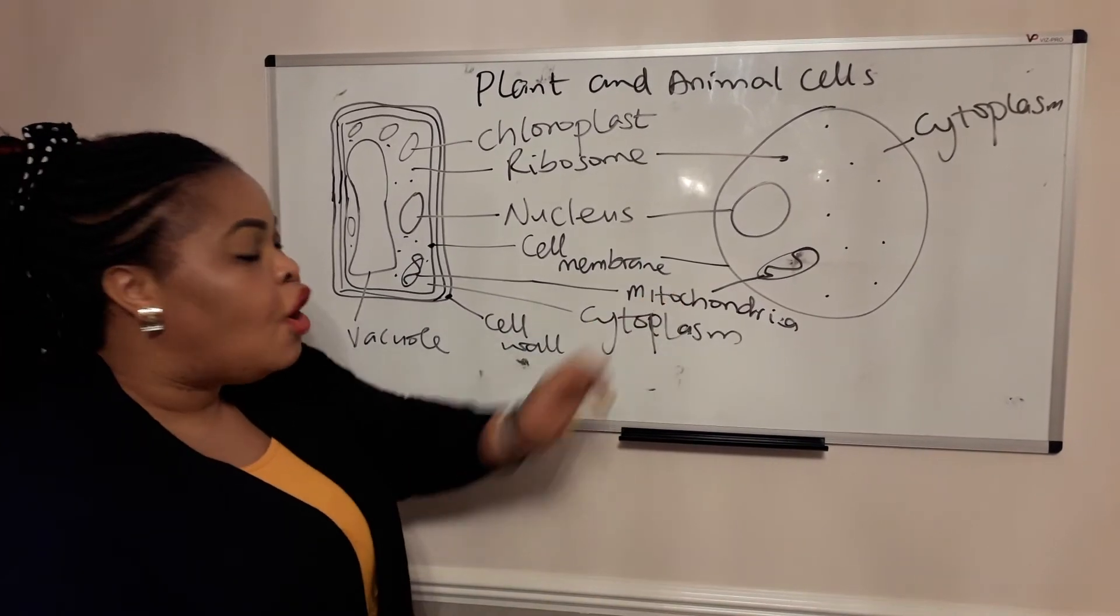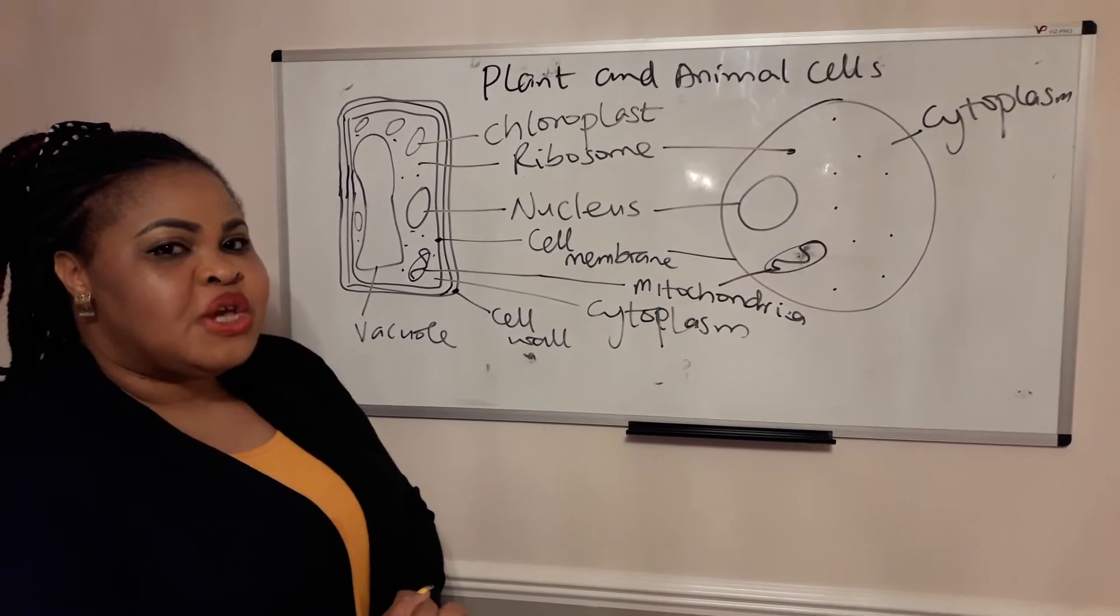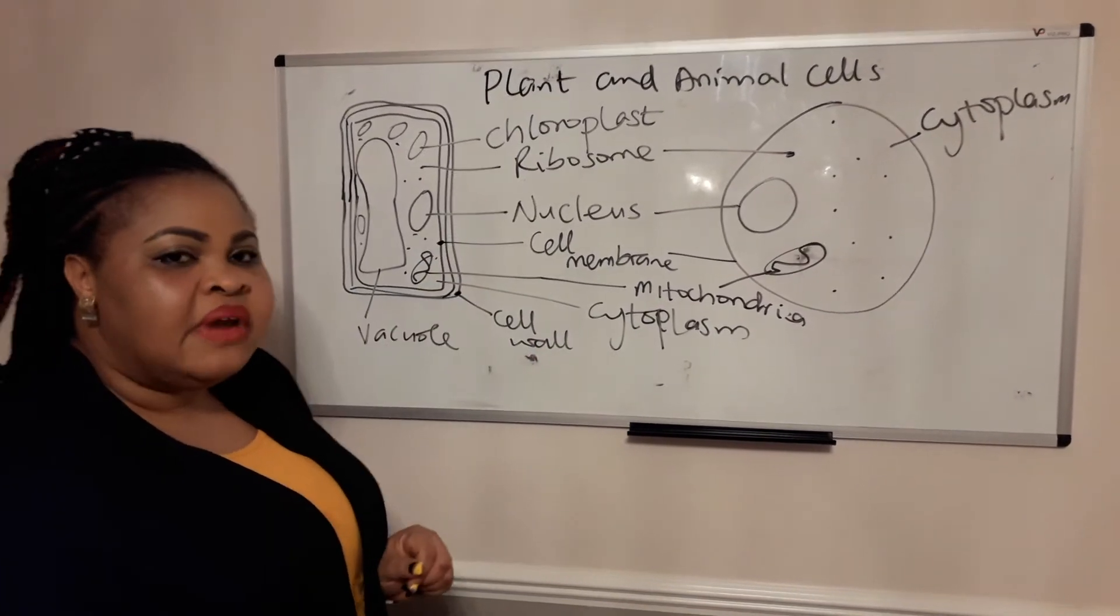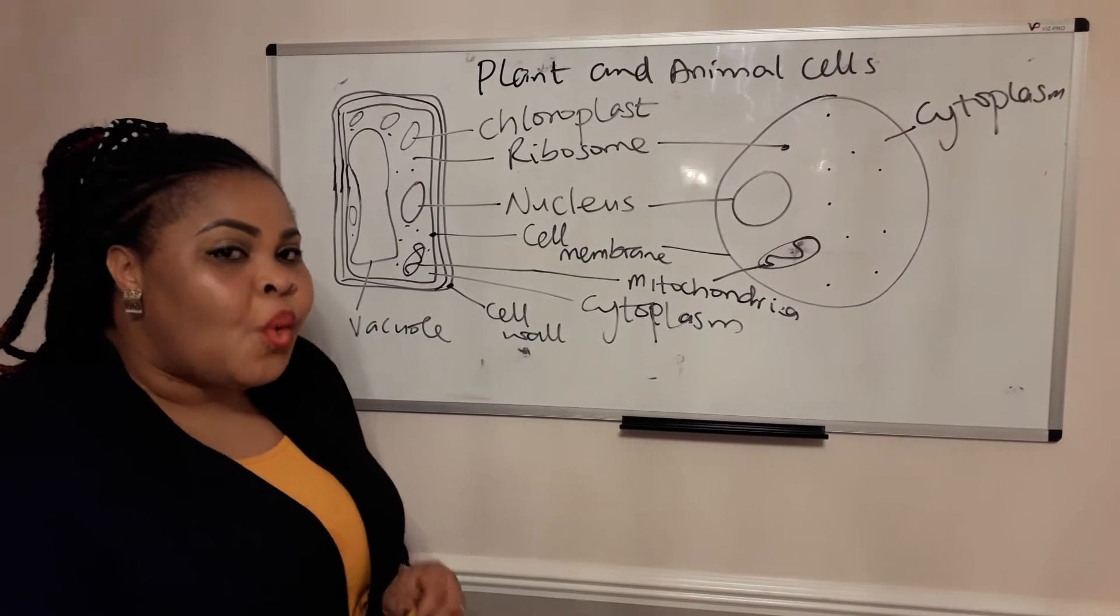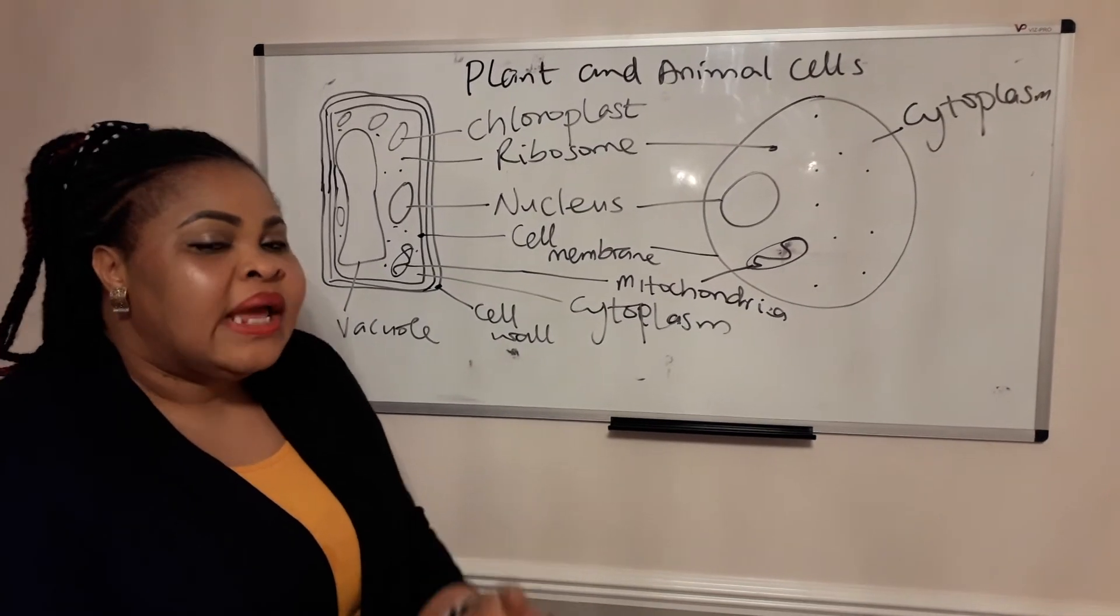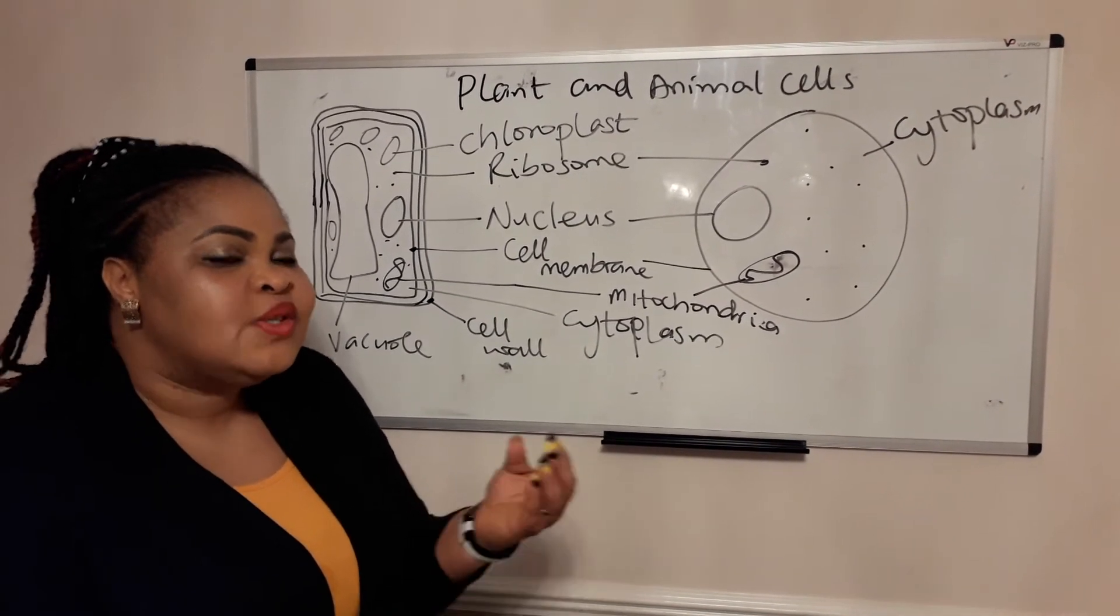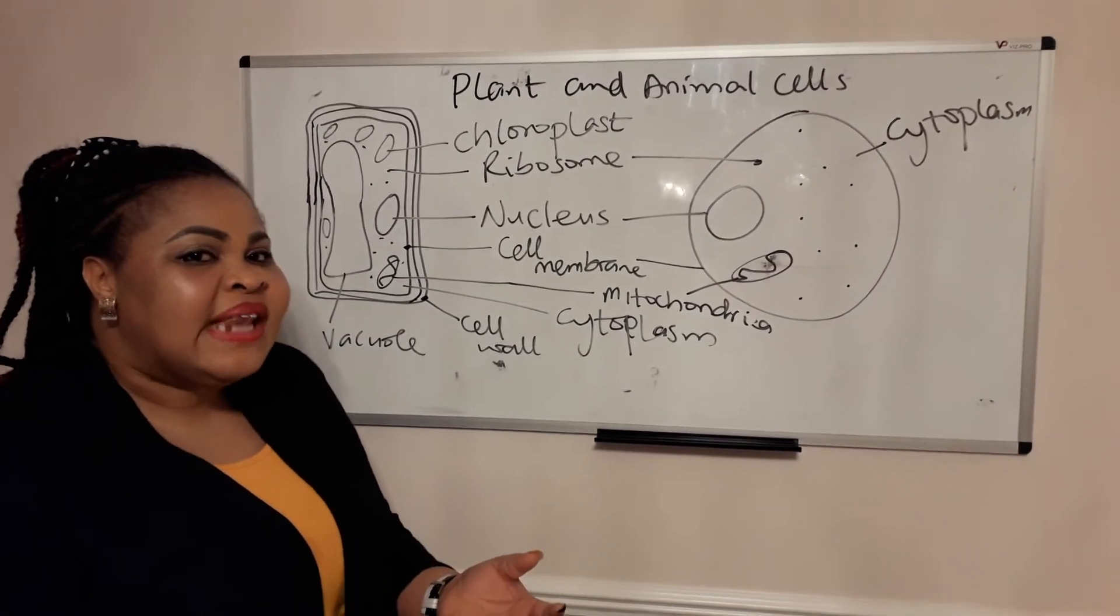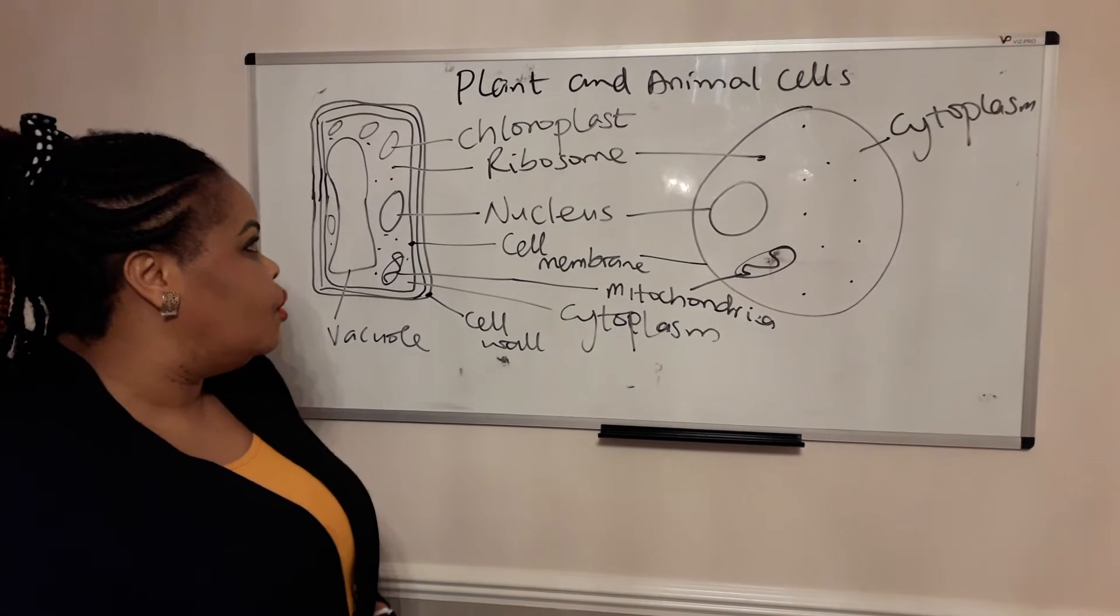And then you have the mitochondria, which is where respiration happens, providing energy for the cell. The ribosome is very important because it plays a vital role in the stage of protein synthesis. It holds the mRNA in place for it to be translated into the right protein.